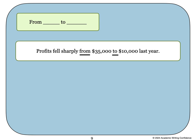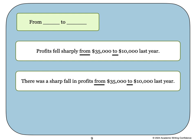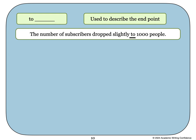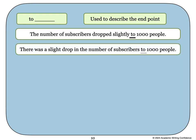Again, we can use our second sentence pattern to write the same information. There was a sharp fall in profits from $35,000 to $10,000 last year. When we want to describe the end point of some information, we will use the preposition to. The number of subscribers dropped slightly to 1,000 people. Or we could write there was a slight drop in the number of subscribers to 1,000 people.